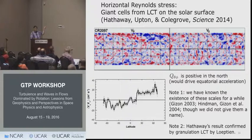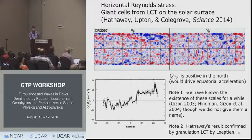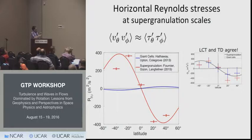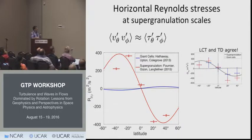A student, Björn Lugtin, actually reproduced the results of Hathaway and they are very close, so there is no question this is not noise — these are real flows on the sun. We then used surface measurements of V_θ and V_φ to measure Reynolds stress at supergranulation scales, and find a completely different answer than Hathaway got for giant cells — a different sign and very different amplitude. The local correlation tracking and supergranulation measurements basically agree at supergranulation scales.